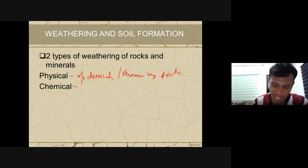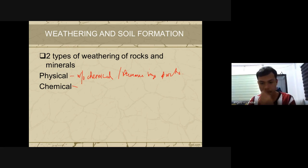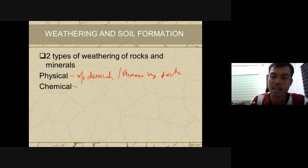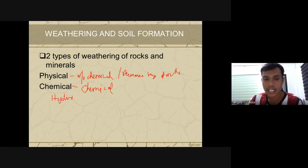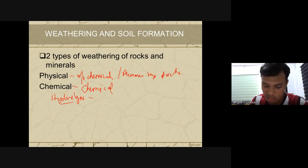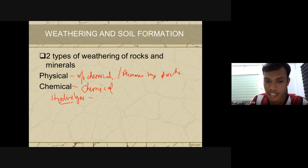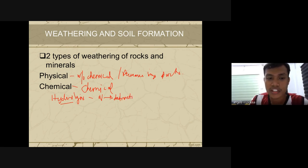Chemical weathering involves a change in the chemical structure and composition. The first type is hydrolysis — there is a reaction with water, but it leads to the destruction of the original chemical structure. Hydration also involves a water reaction, but does not lead to destruction of the chemical structure.